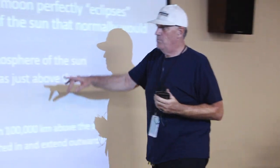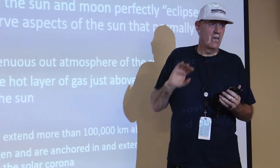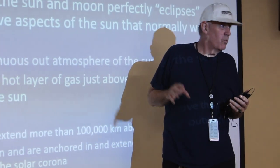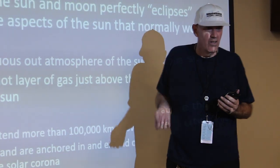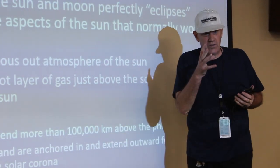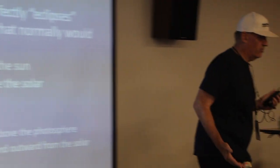The solar corona is measured in millions of degrees and is poorly understood — why the sun's corona is so much hotter than the photosphere disk, which is about 6,000 degrees. The corona is measured in millions of degrees, whereas the actual disk of the sun, the photosphere, is about 6,000 degrees.